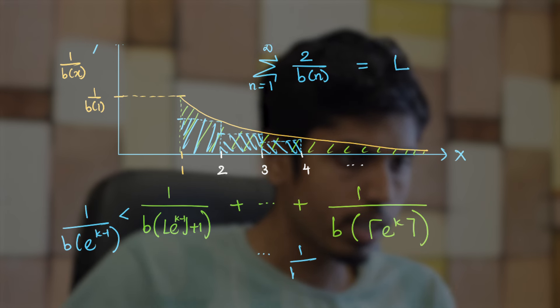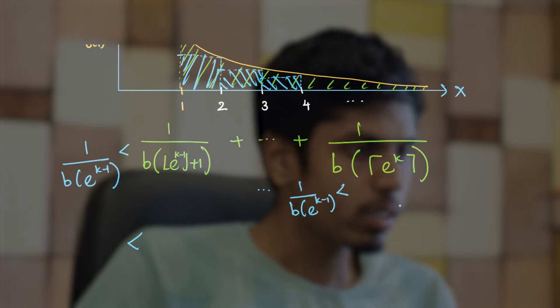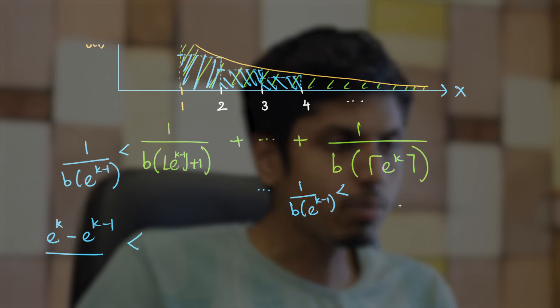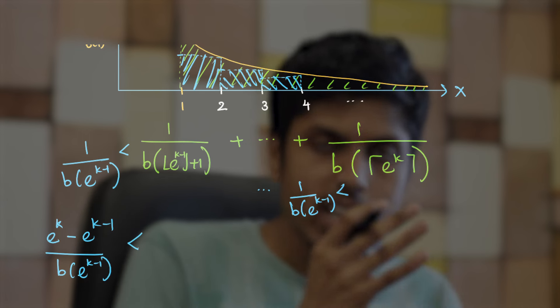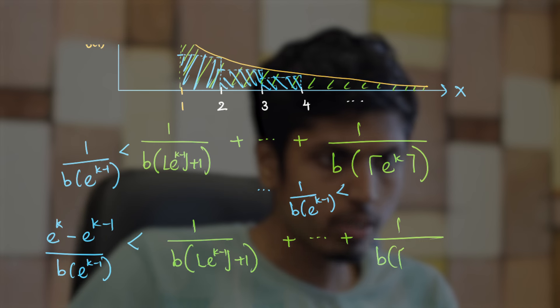Now, when you sum all of them, you will also get sum of inequalities and there are at least e^k - e^(k-1) numbers in the sum and each sum is greater than 1/b(e^(k-1)). And adding all, you will get this to be the LHS of inequality. And your RHS would be 1/b(⌊e^(k-1)⌋ + 1) all the way till 1/b(⌈e^k⌉).